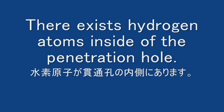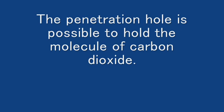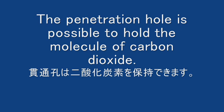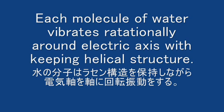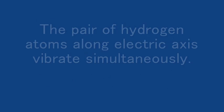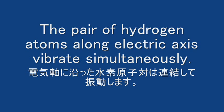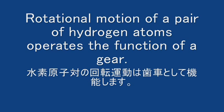There are hydrogen atoms inside of the penetrating hole. This penetrating hole is able to hold the molecule of carbon dioxide, because each carbon atom is covered with a pair of oxygen atoms. When each molecule of water vibrates rotationally around an electric axis while keeping the helical structure, the pair of hydrogen atoms along an electric axis vibrates simultaneously. This vibration accompanies a fluctuation of the volume. The rotational motion of hydrogen atoms operates the function of a gear.